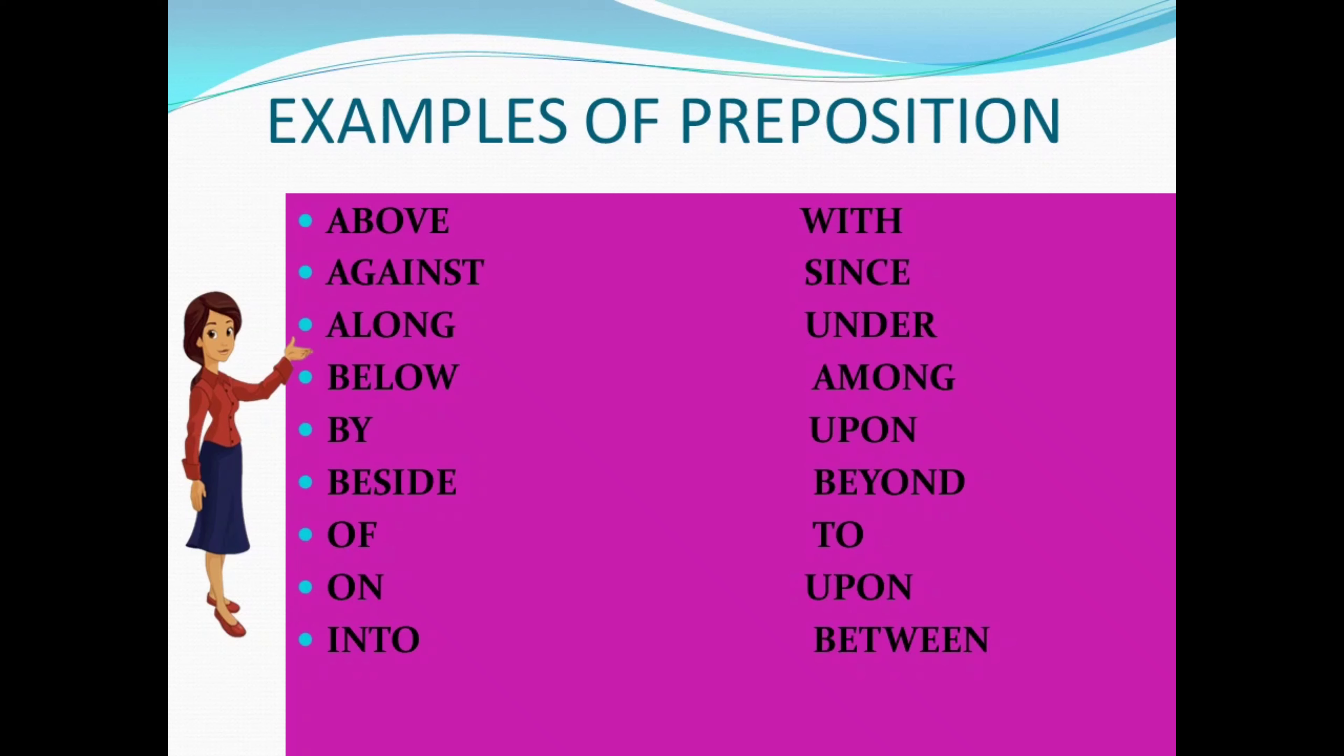So here there are various kinds of prepositions. There are a few examples which I have written. The first one is 'above,' which means above anything, like above the table or above the chair. Next word is 'against' - to go against your family or to go against your friend. 'Along' - I along with my friends went for a trip.